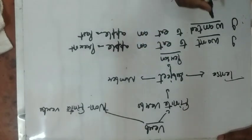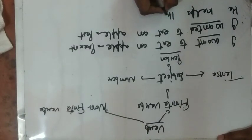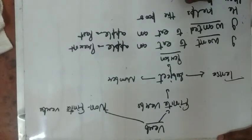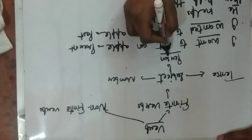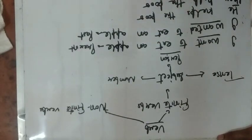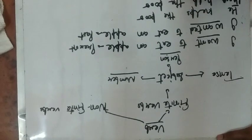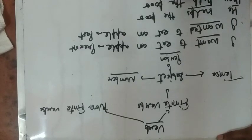Now it changes according to person as well. He helps the poor. They help the poor. Here 'he' is singular and 'they' is plural, and both are third person. So 'helps' and 'help' are finite verbs which change according to number.